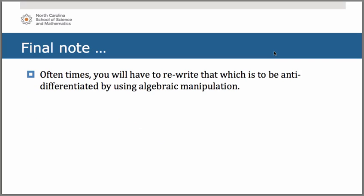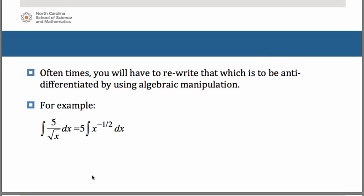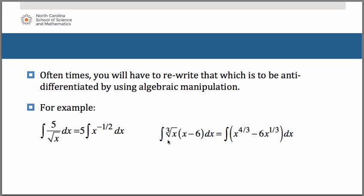As you work through anti-derivative problems on your own, often you will have to rewrite the expression using algebraic manipulation. For example, for the anti-derivative of 5 over the square root of x dx, the 5 comes out front as a constant, and we rewrite the square root of x as x to the negative one-half, then apply the power rule. Similarly, for the anti-derivative of the cube root of x times the quantity x minus 6 dx, we rewrite the cube root of x as x to the one-third and distribute, arriving at x to the four-thirds minus 6x to the one-third, then apply the power rule.